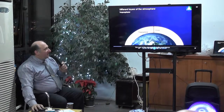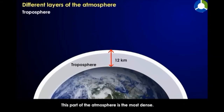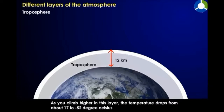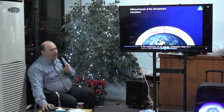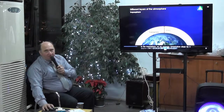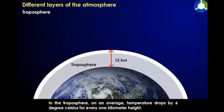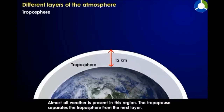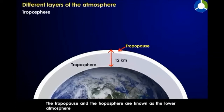It is the region of water — clouds — around 12 km. This part of the atmosphere is the most dense. As you climb higher in this layer, the temperature drops from about 17 to minus 52 degrees Celsius. On average, temperature drops by 6 degrees Celsius for every 1 km height. Almost all weather is present in this region. The tropopause separates the troposphere from the next layer.